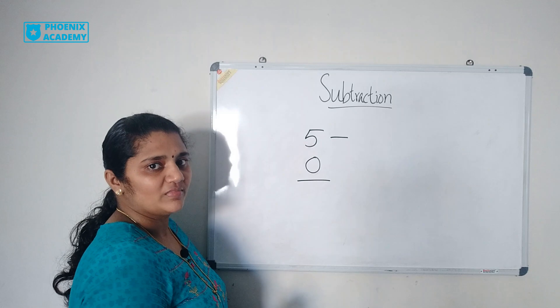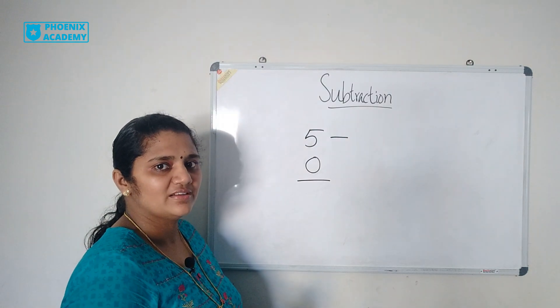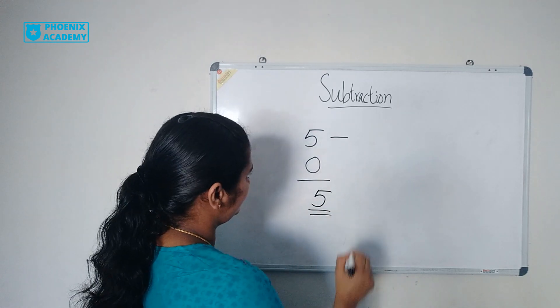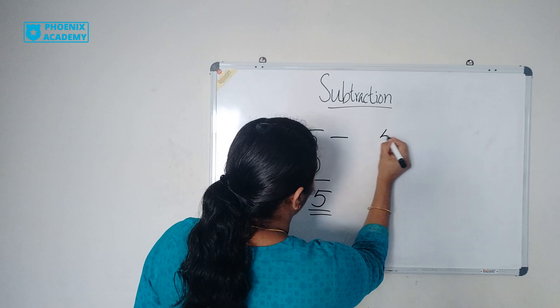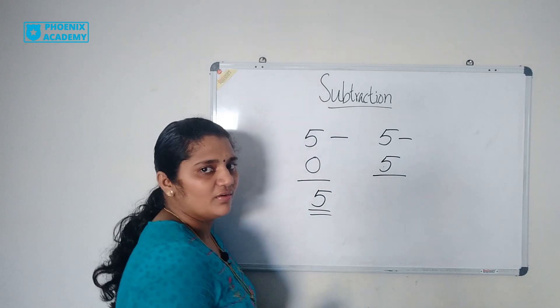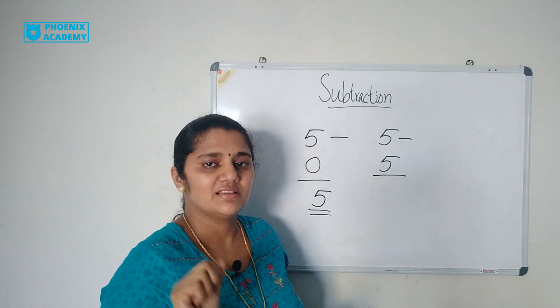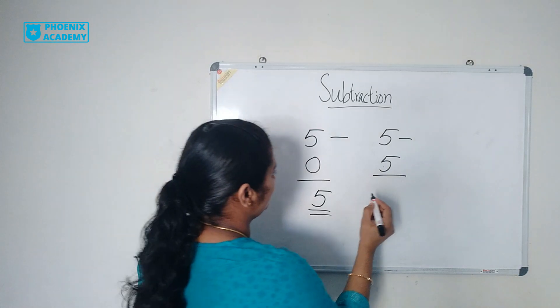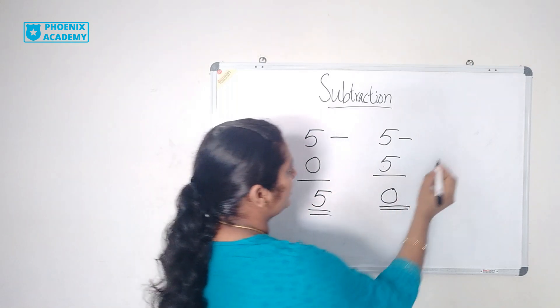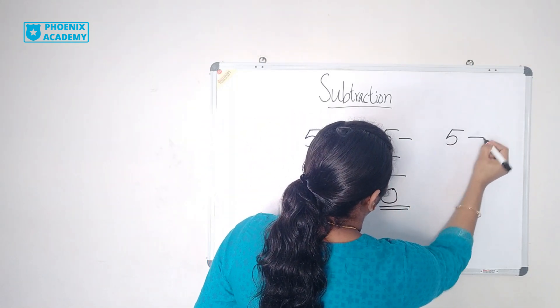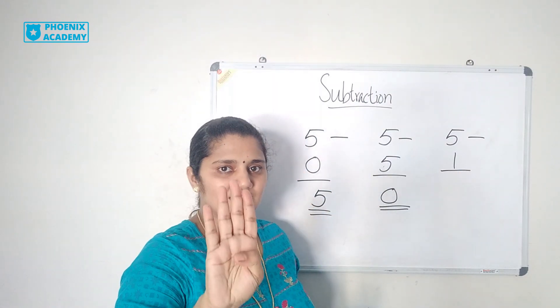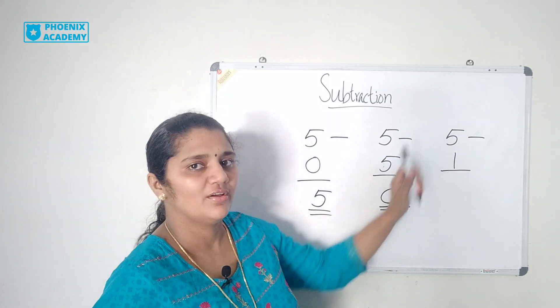5 minus 0. 5 minus 0 is 5. 5 minus 5. 5 minus 5 is 0. So when you subtract a number from the same number the result is 0. And 5 minus 1. What is 5 minus 1? 4. 4 is before number of 5.